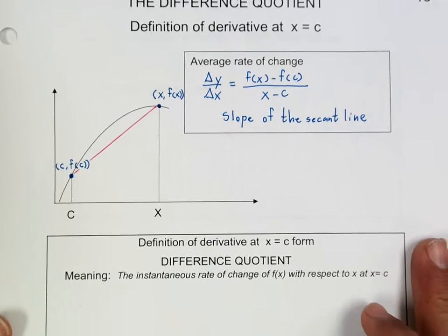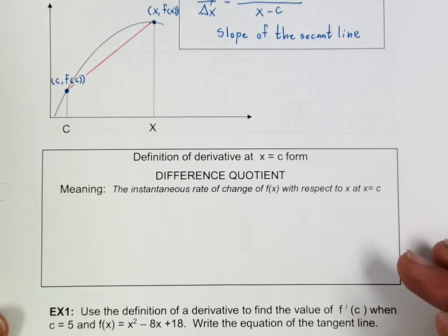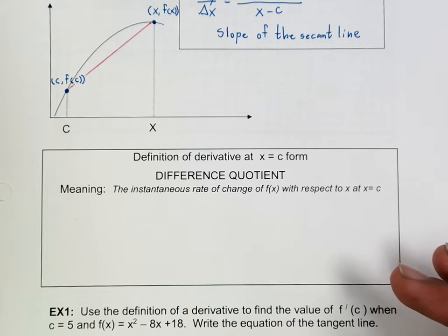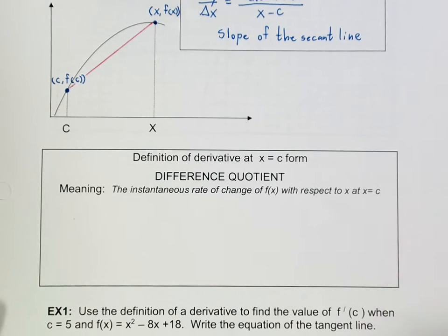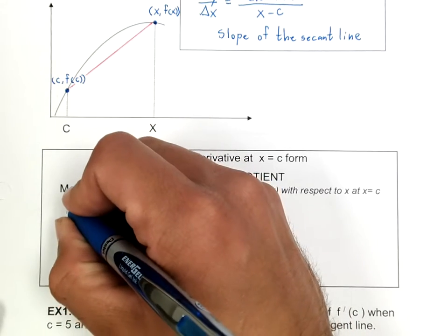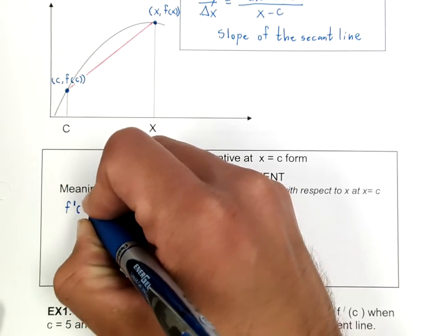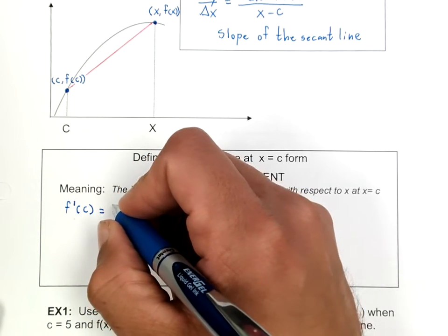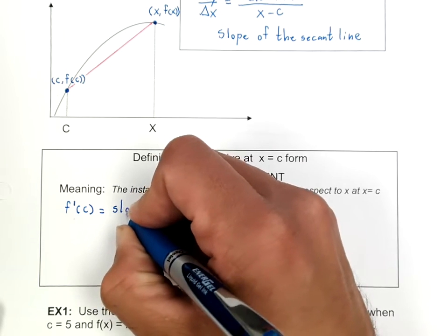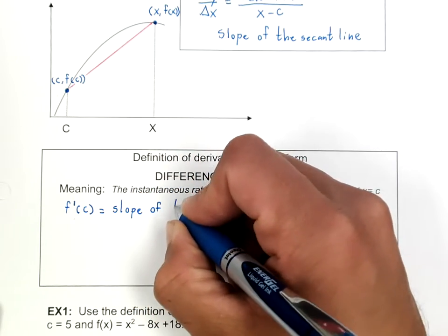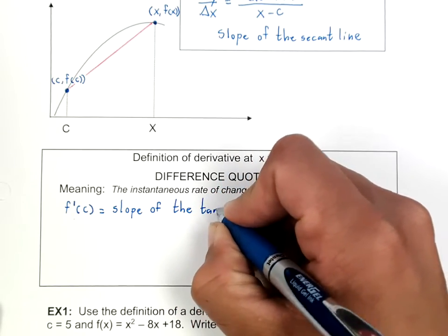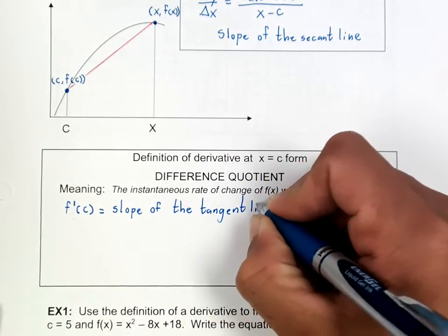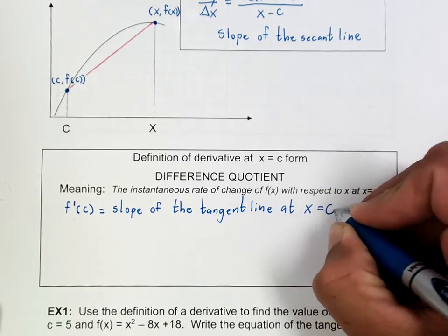On the other hand, if I'm trying to figure out the slope of the tangent line at c, we're going to take a derivative. The meaning of a derivative is the instantaneous rate of change of f(x) with respect to x at x equal to c. Don't forget that all the derivative is — it may sound really complicated, but all it is — is the slope of the tangent line at x equal to c.